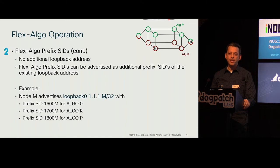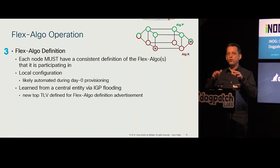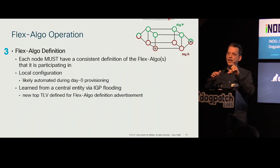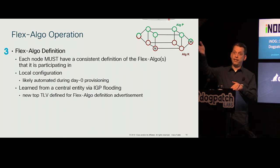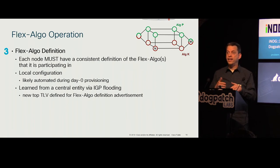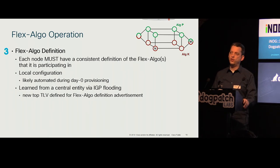What does that topology look like? You define it. The definition must be consistent — all routers in the Flex Algo instance need to be computing for the same goal, otherwise there's a problem. The Flex Algo definition can be manually configured on the device, automated and pushed on day zero, or flooded from a few nodes in the IGP. One sample definition could be: minimize delay for members of topology K.